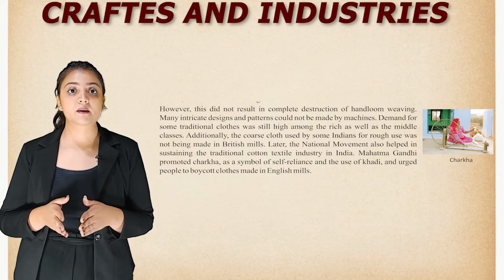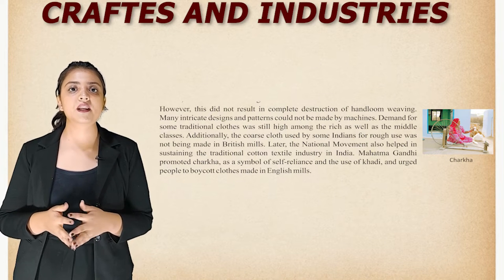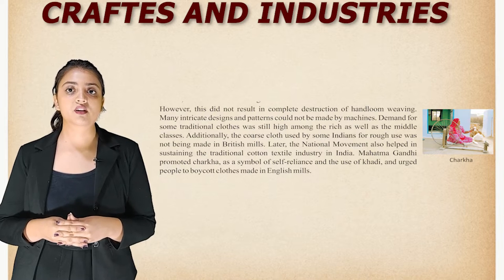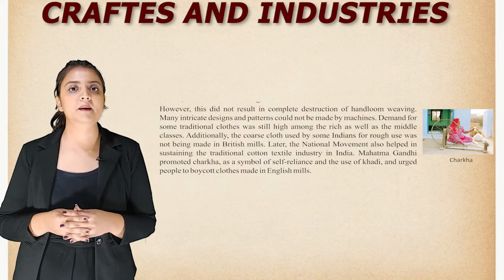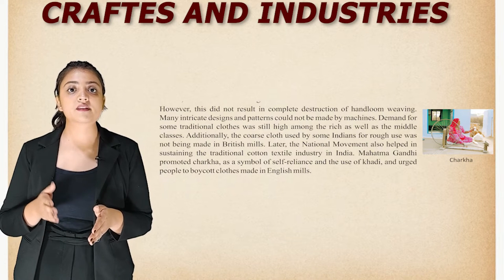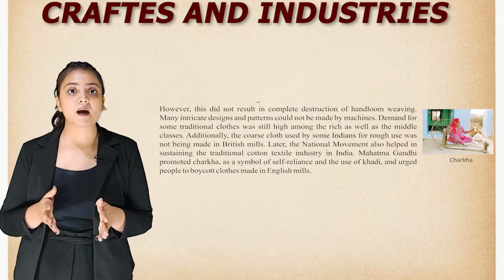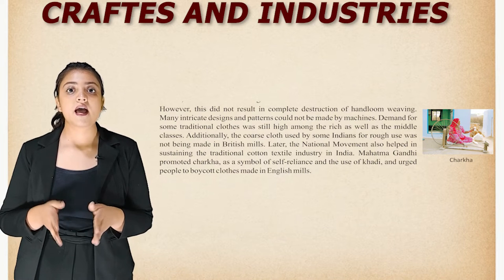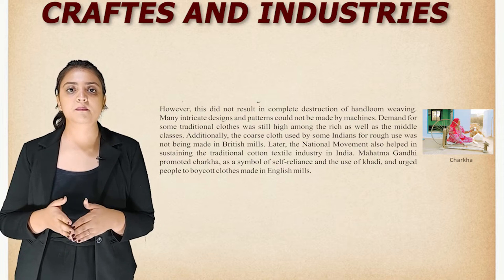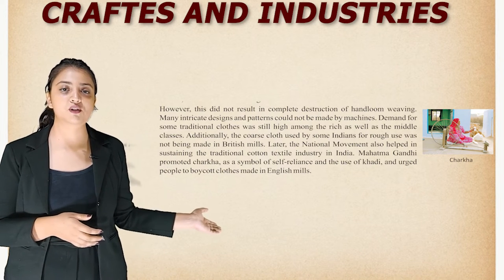However, this did not result in a complete destruction of handloom weaving. Many intricate designs and patterns could not be made by machines, and demand for some traditional clothes was still high among the rich as well as the middle classes. Additionally, coarse cloth used by some Indians for rough use was not being made in British mills. Later, the national movement helped sustain the traditional cotton textile industry. Mahatma Gandhi promoted the charkha as a symbol of self-reliance and urged people to boycott clothes made in English mills.